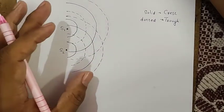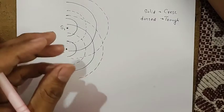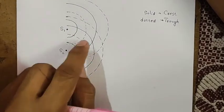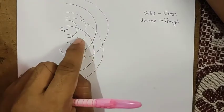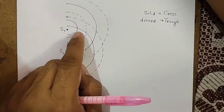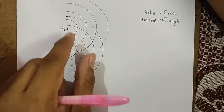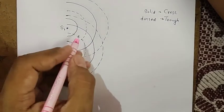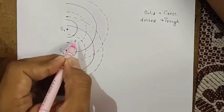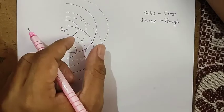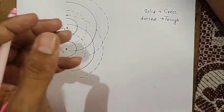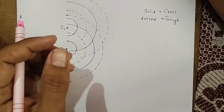These are the two waves created by the two sources. Now if you look at this region, you can see that waves coming from both sources are overlapping. This overlapping of waves is called interference.